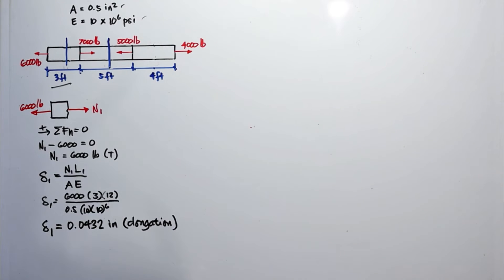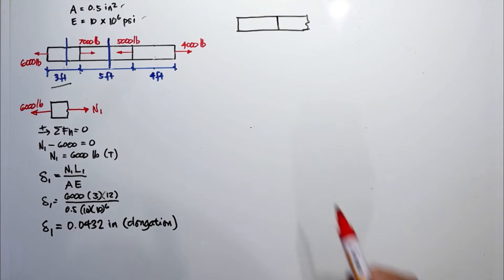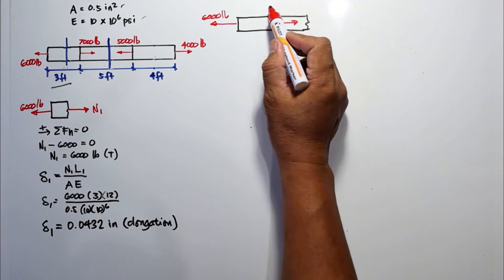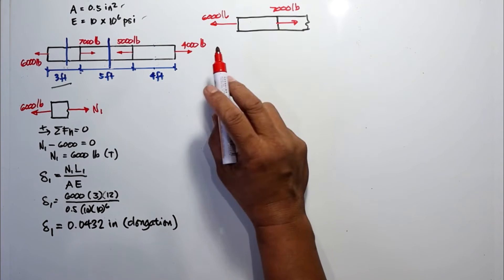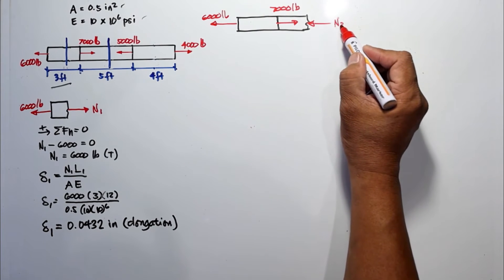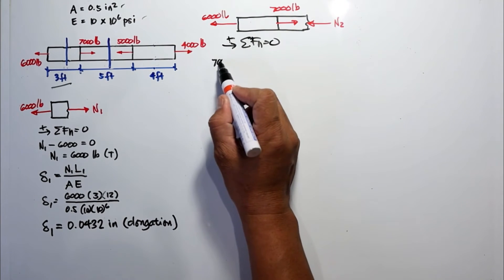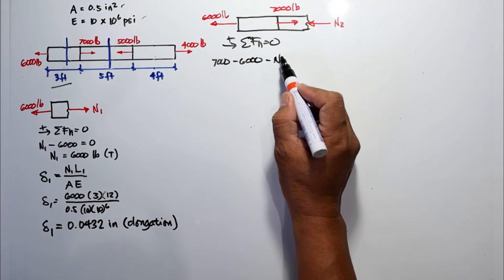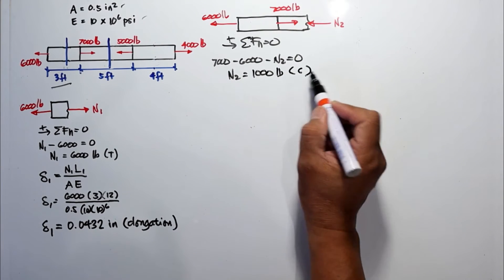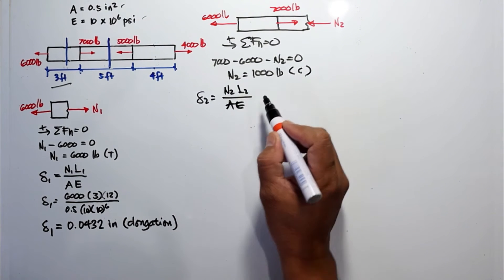For the next section, we cut and draw the free body diagram including two external forces: six thousand pounds and seven thousand pounds. The force to the right is greater, so the internal force N sub 2 is to the left, indicating compression. Summing horizontal forces: seven thousand minus six thousand minus N sub 2 equals zero, giving N sub 2 equals one thousand pounds in compression.